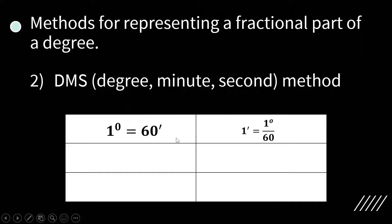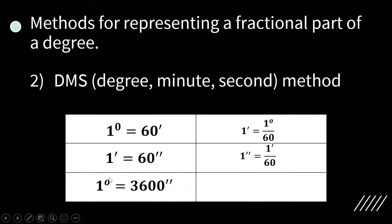A minute is again subdivided into 60 equal parts called seconds. So 1 minute is equal to 60 seconds, in fraction that is 1 minute over 60. And therefore, 1 degree is equal to 3600 seconds, in fraction that is 1 degree over 3600.